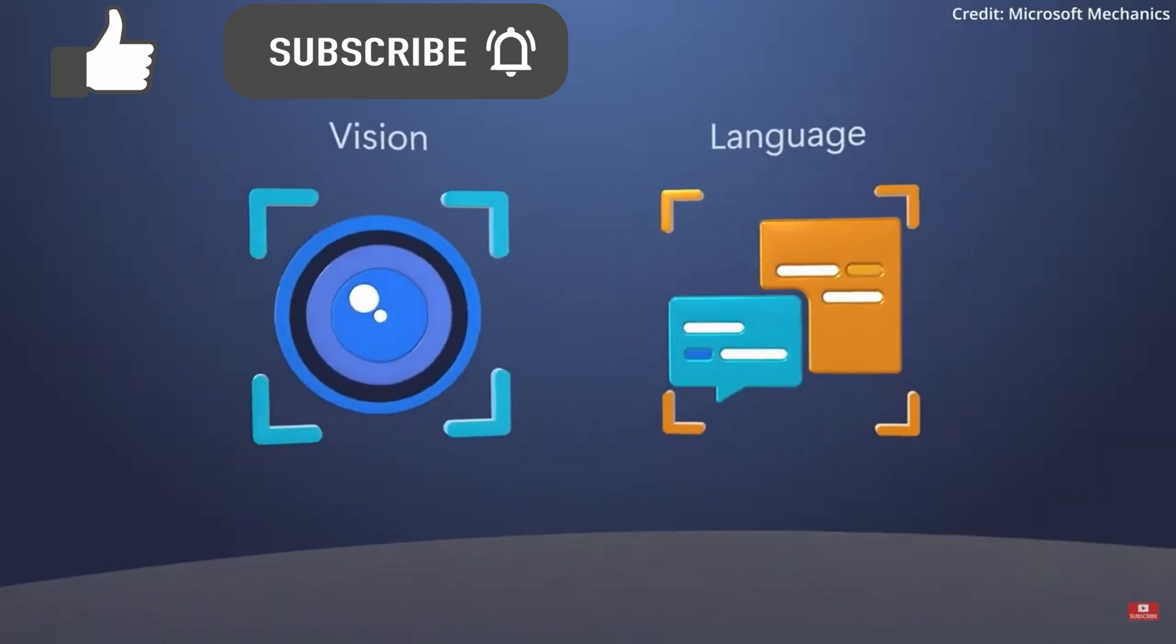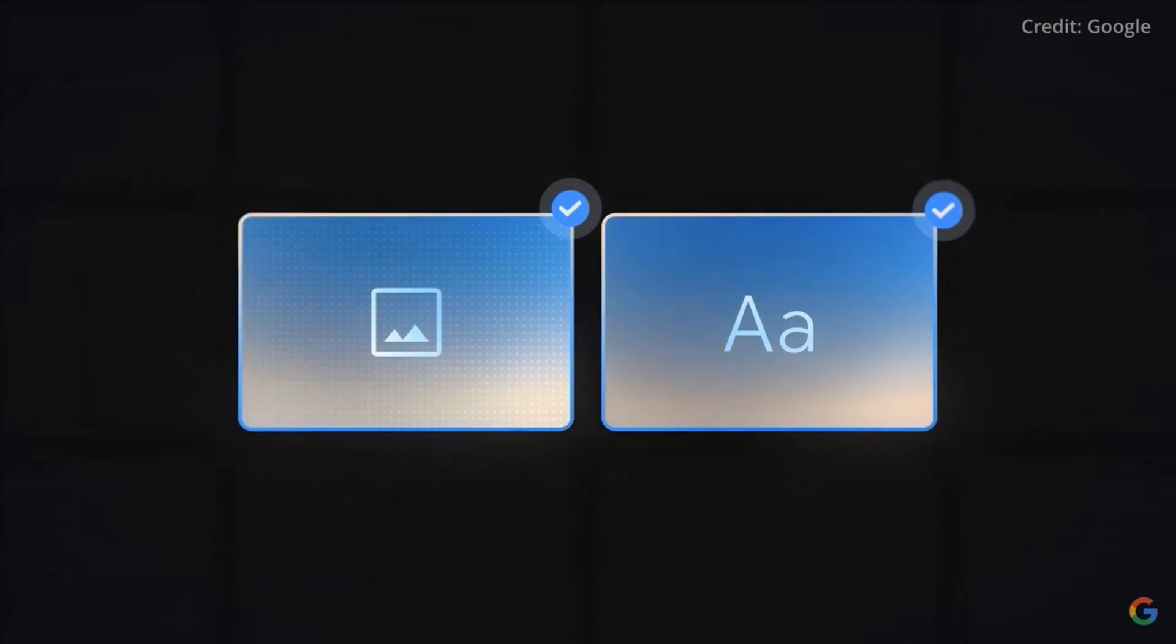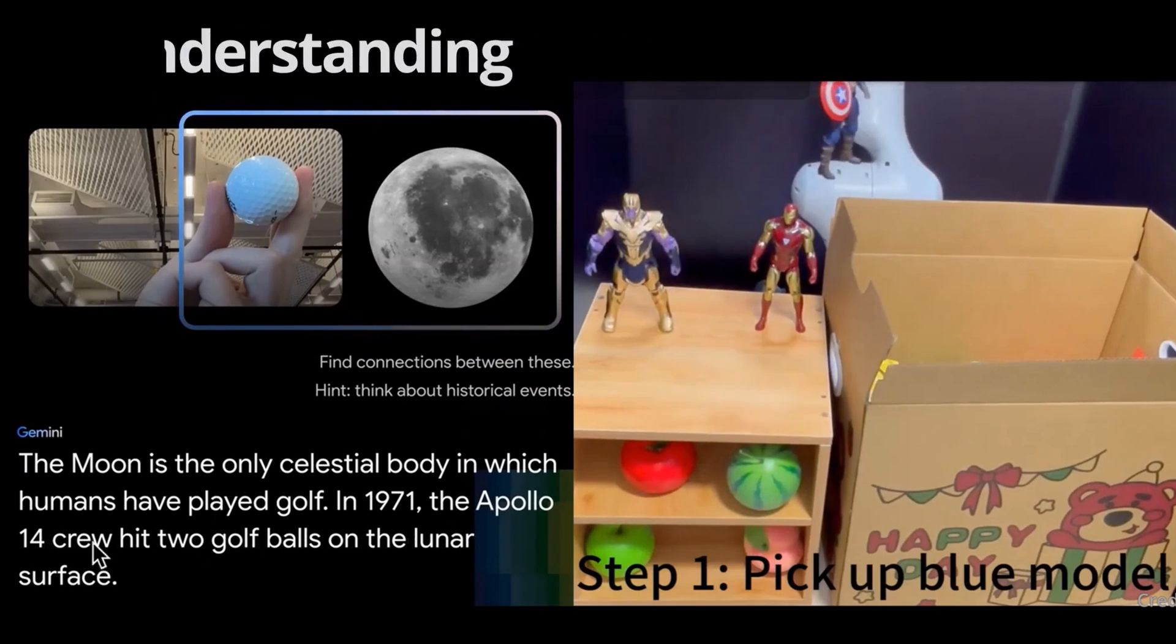While both can exceed human-level vision and reasoning in some tasks, a side-by-side evaluation hasn't been available until now, starting with number one: visual understanding.